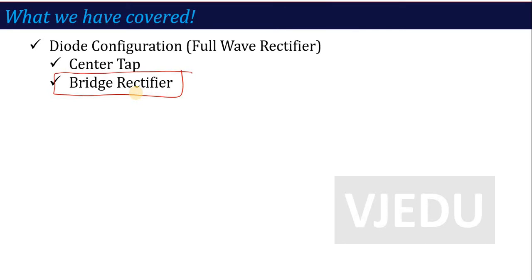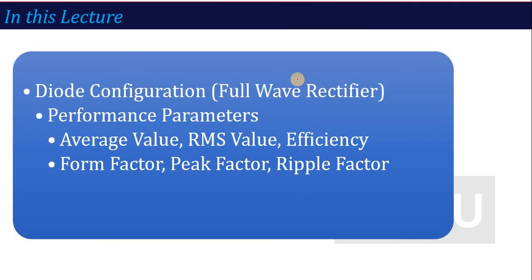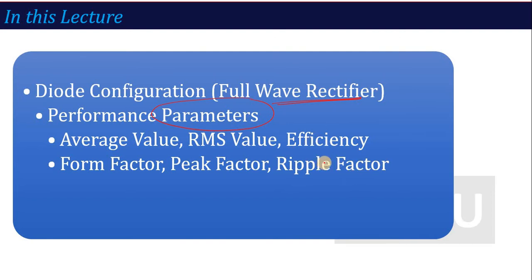Now in this lecture, just like we derived performance parameters for the half wave rectifier, we will do the same for the full wave rectifier. The different performance parameters are: average value, RMS value, efficiency, form factor, peak factor, and ripple factor. We will see all these parameters one by one in this lecture — performance parameters of full wave rectifiers.